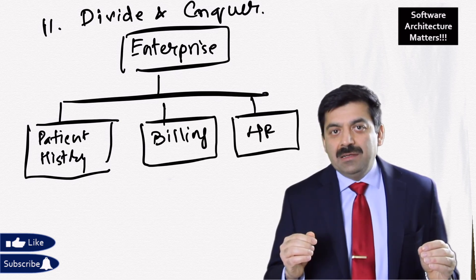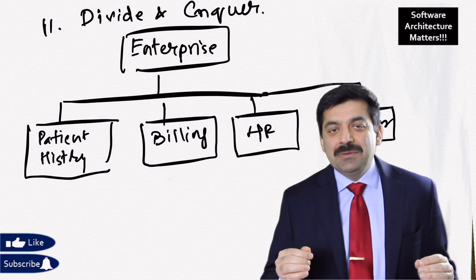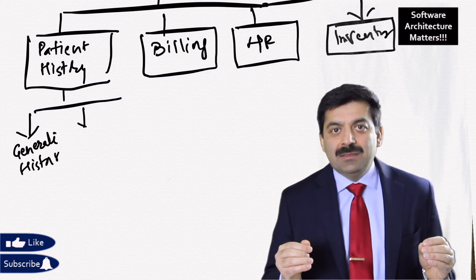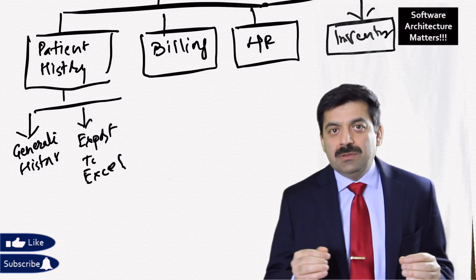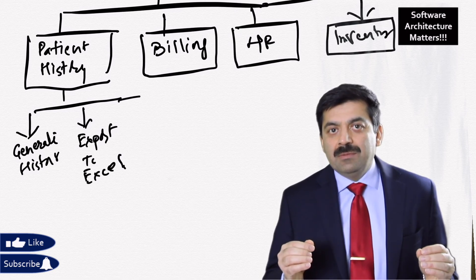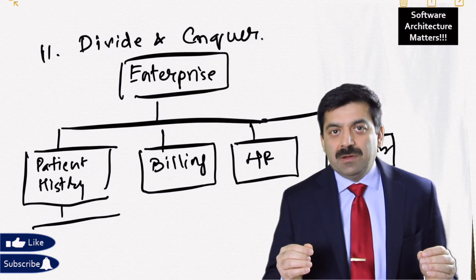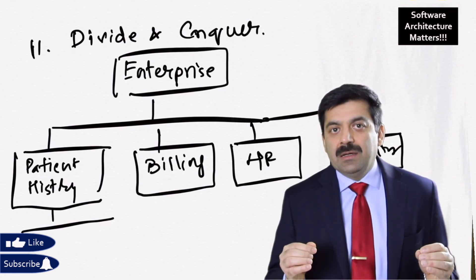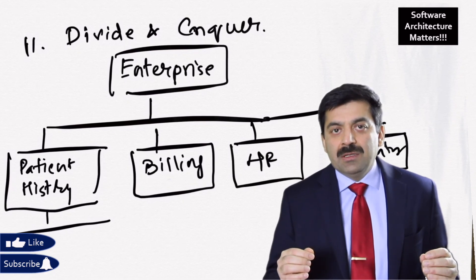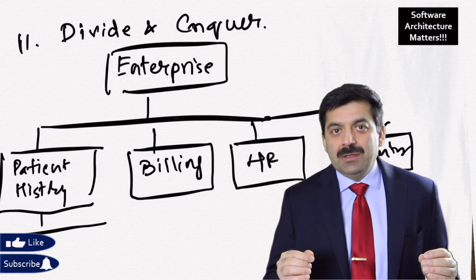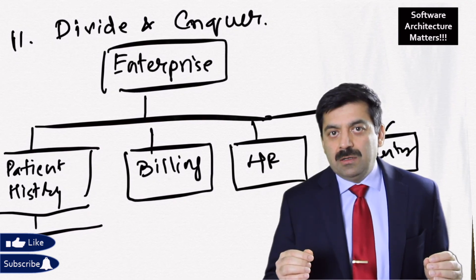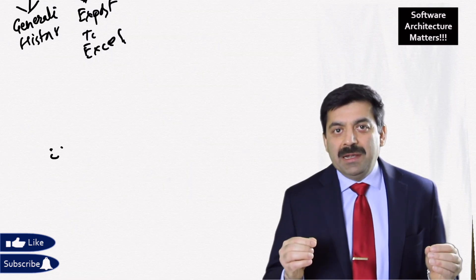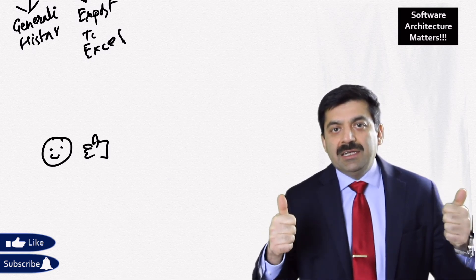The final, eleventh technique is divide and conquer. Using divide and conquer, we can divide a big problem into smaller problems. In an enterprise, we can break it into different departments and create different packages or solutions for each — like patient history, billing, and inventory. Within patient history, we can further break it into multiple modules. The benefit is that you can divide complexity into small tasks and distribute them among the team. As the saying goes, how do you eat an elephant? One bite at a time.